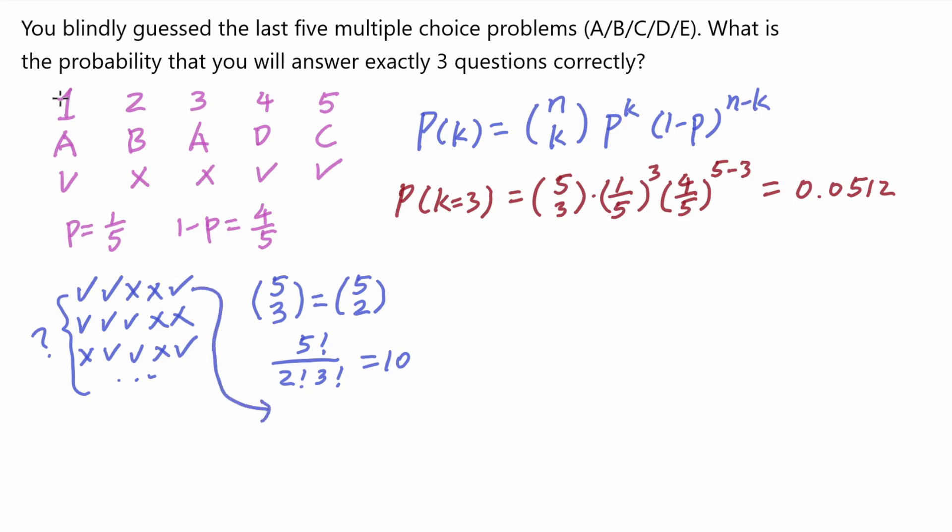if you look at this first example I drew, this is basically saying I have to answer the first question correct, the second question correct, the third one incorrect, the fourth one incorrect, and the fifth one correct.